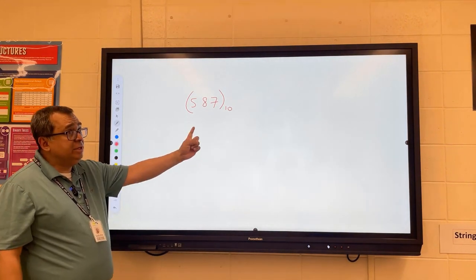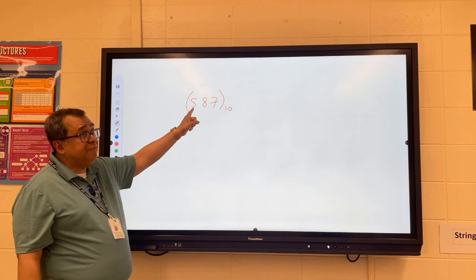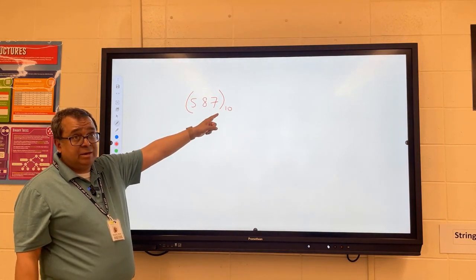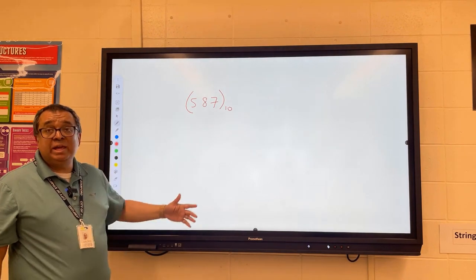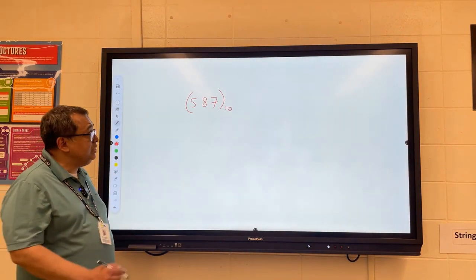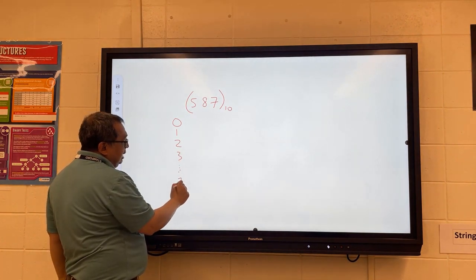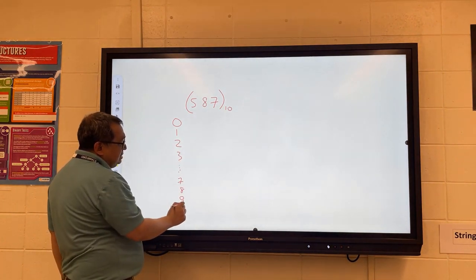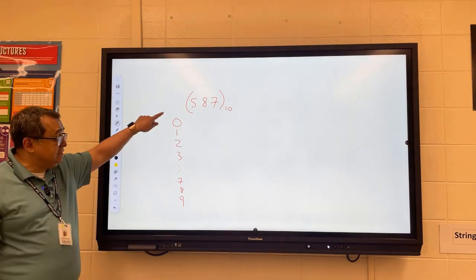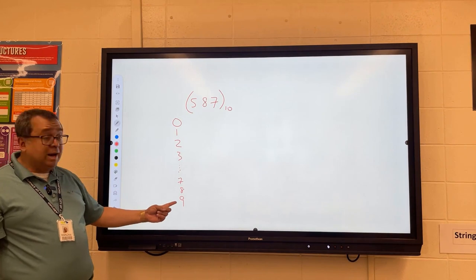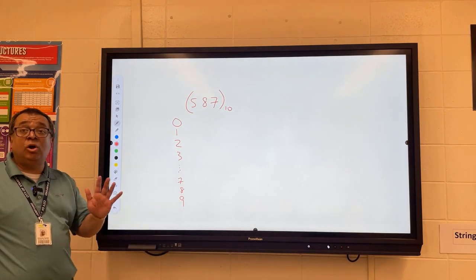Now, this number here, you need to understand this number here is not 5. That number is 500. That number is 80. And that number is 7. The way we count in base 10 is we start at 0, we start increasing, and then we eventually get to the last digit. Base 10 has 10 digits, 0 through 9.